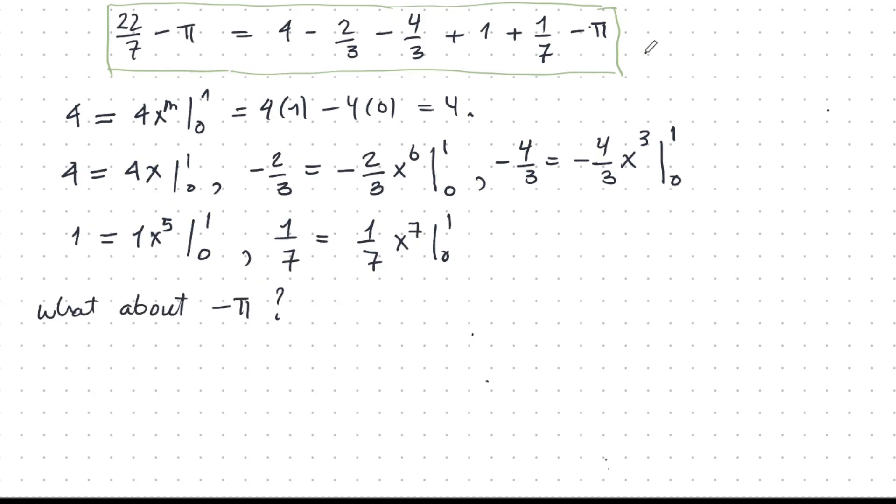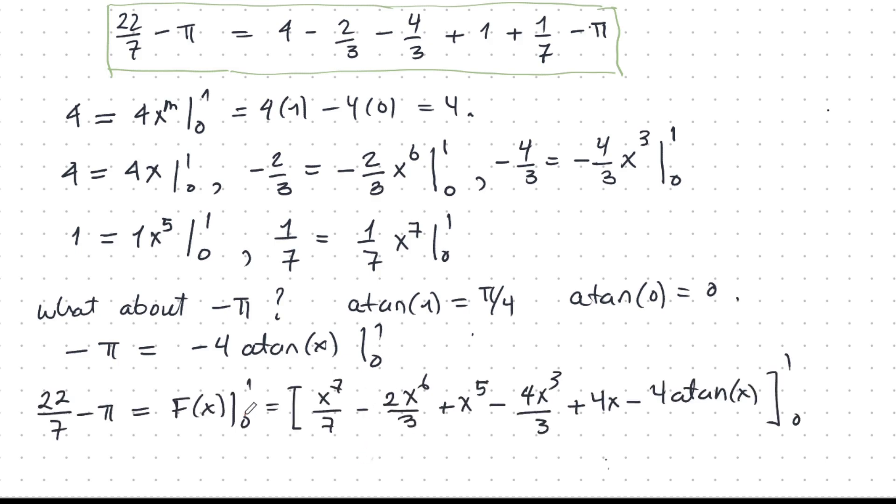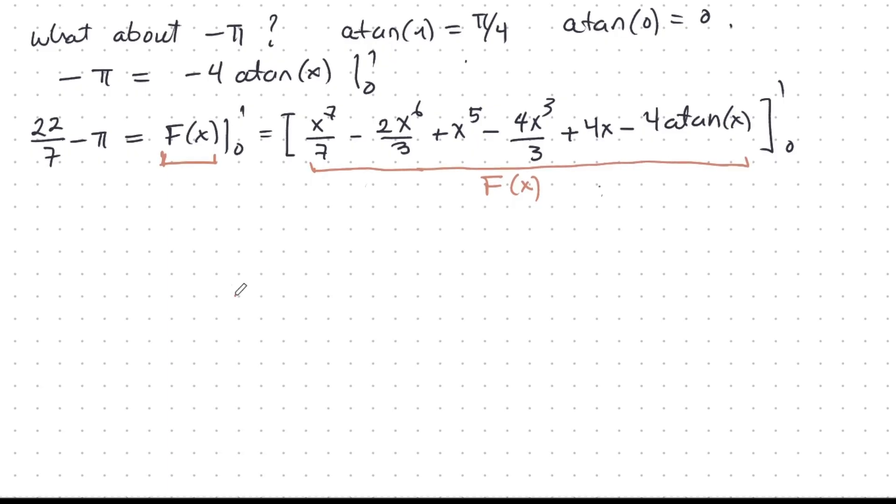We have the minus pi here. We're not finished, so what about minus pi? Well, arctan 1 is pi over 4, and arctan 0 is 0. So minus pi is minus 4 arctan x evaluated from 0 to 1. So I have this expression, and this is my big F here. And I claim that this big F is exactly the one that I'm looking for.